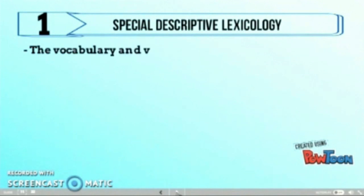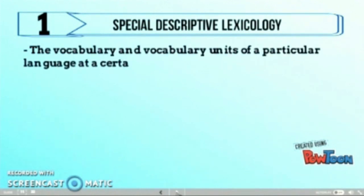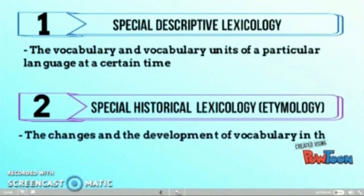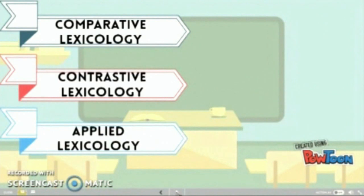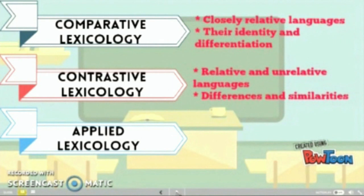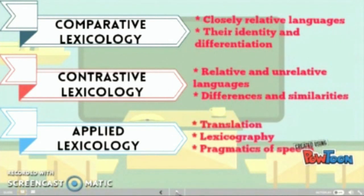Special descriptive lexicology deals with the vocabulary and vocabulary units of a particular language at a certain point in time. Special historical lexicology, or diachronic lexicology, deals with the changes and development of vocabulary over the course of time. Comparative lexicology studies closely related languages from the point of view of their identity and differentiation. Contrastive lexicology studies both related and unrelated languages and establishes their differences and similarities.